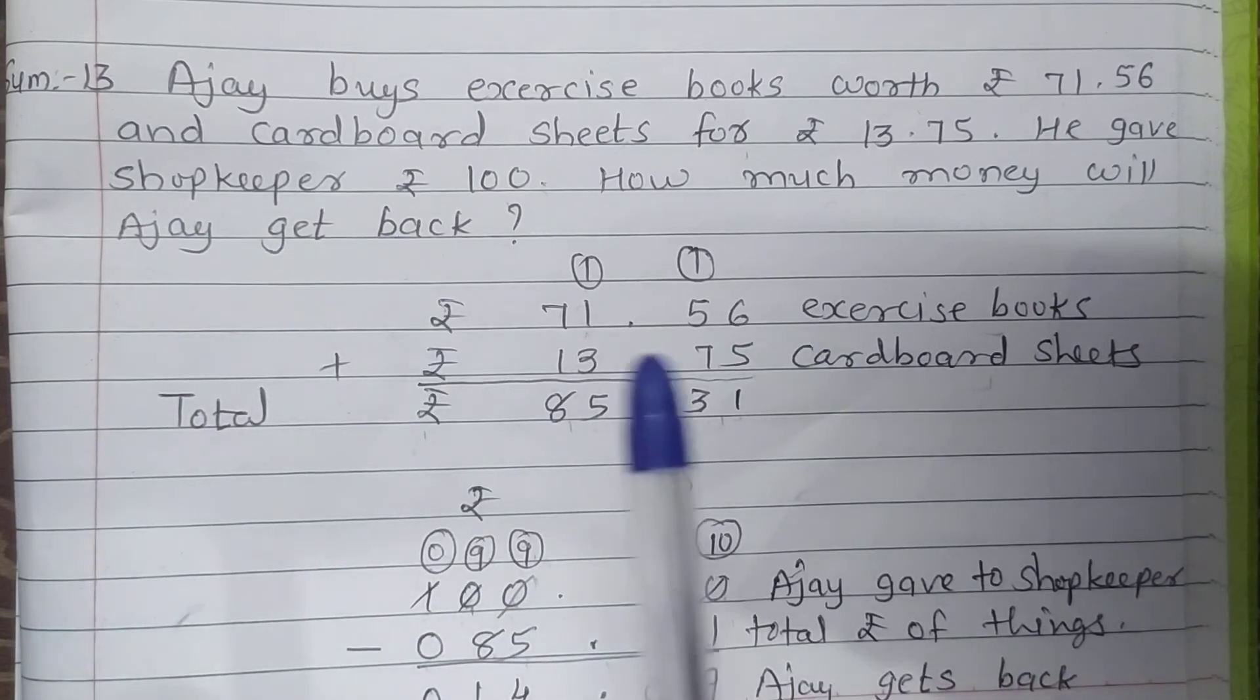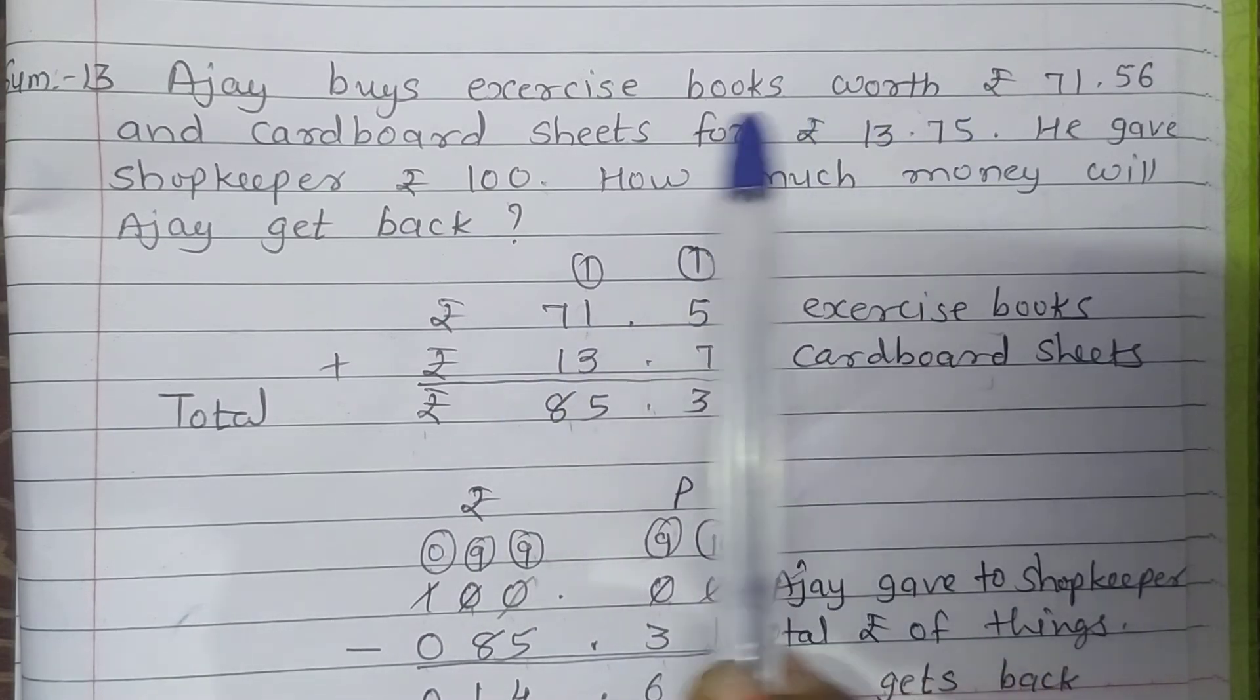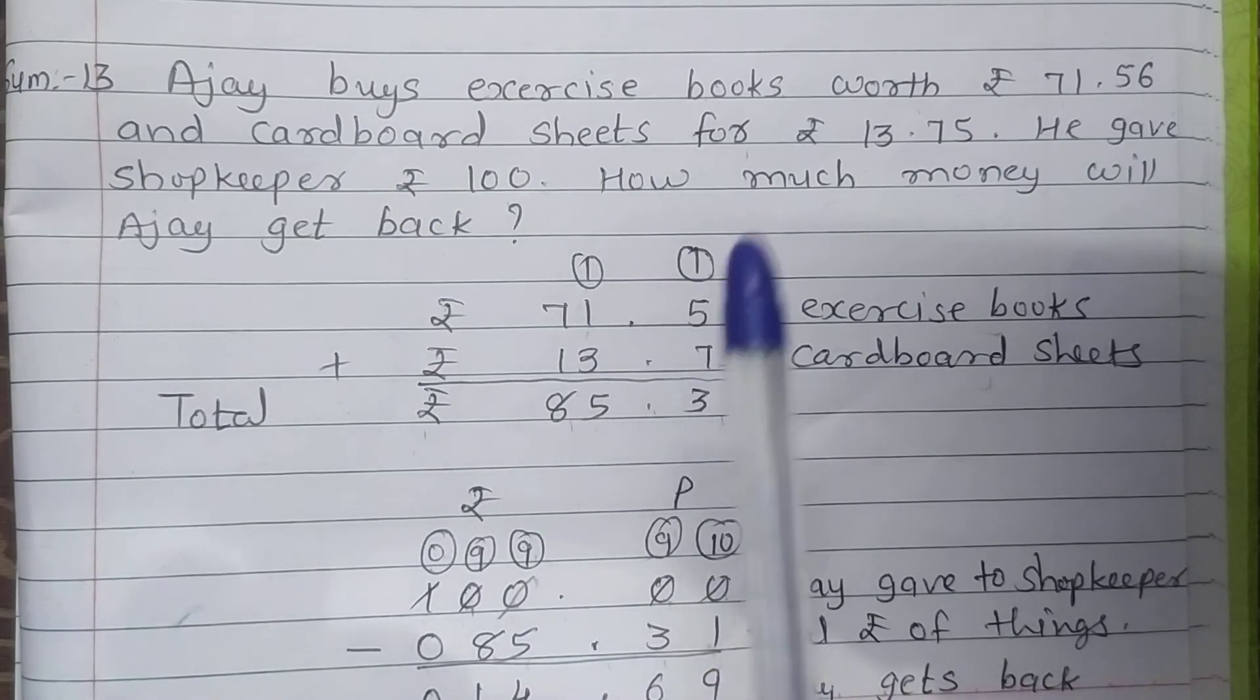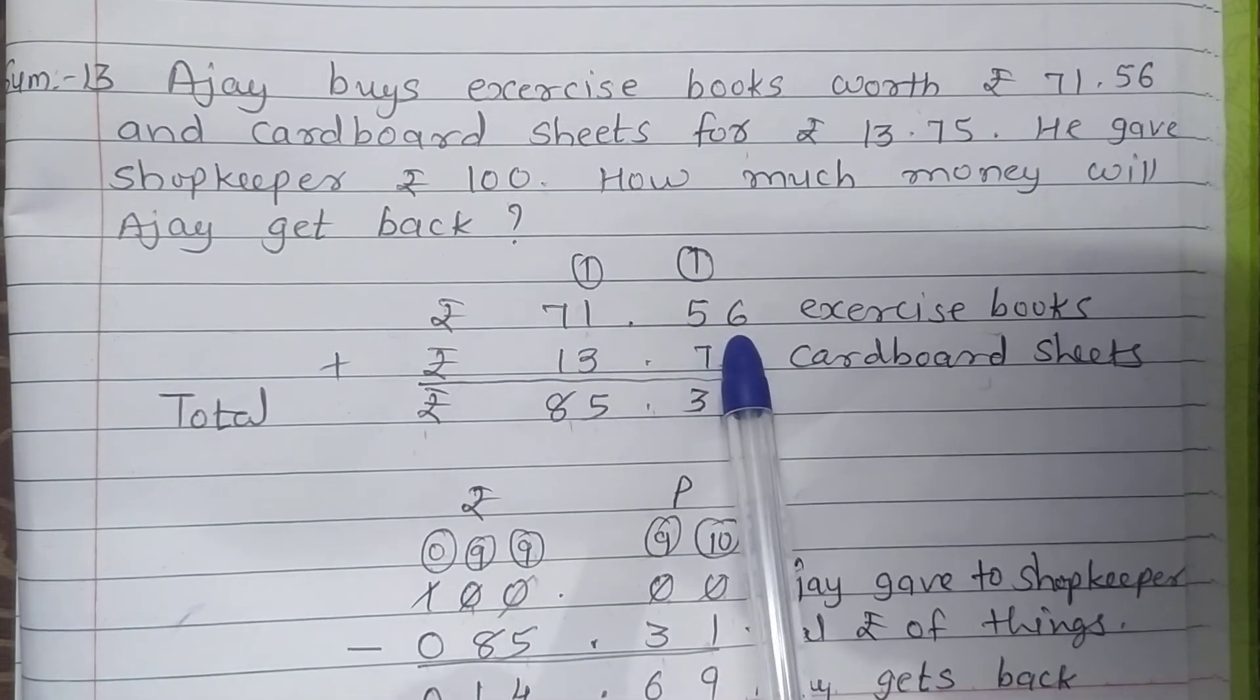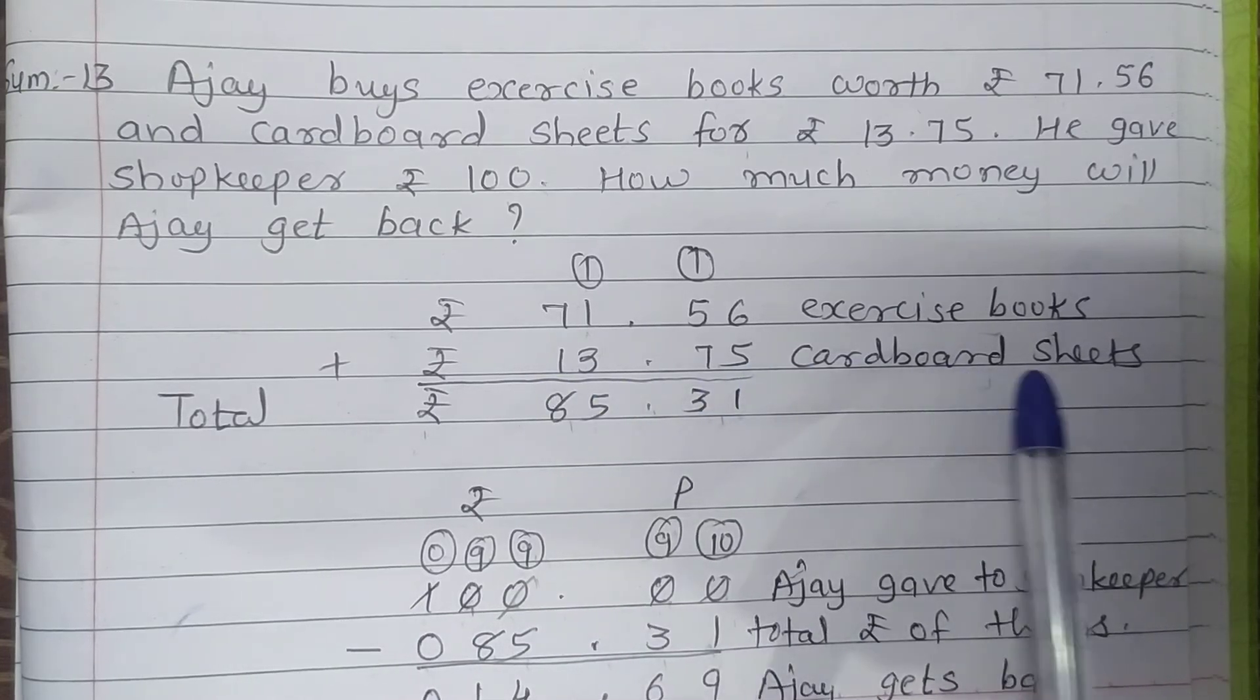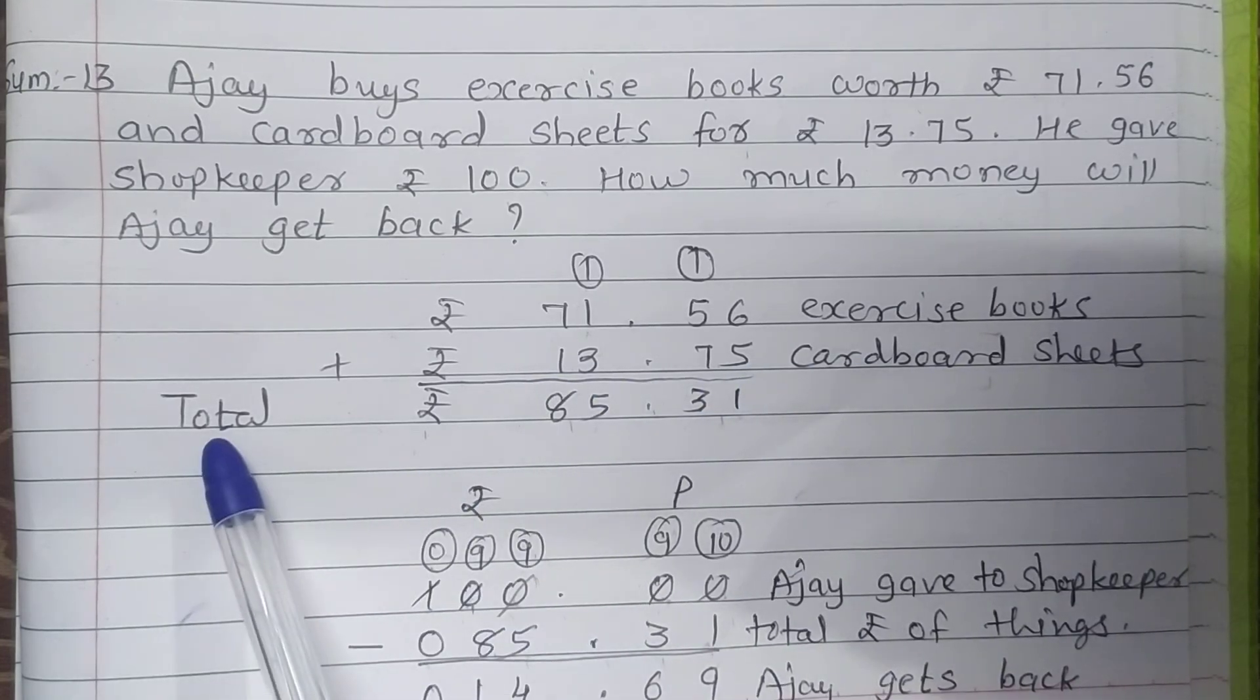First of all we will do addition of worth of exercise book and worth of cardboard sheets. So Rs. 71.56 exercise book and 13.75 cardboard sheets. Then what is the total expense?